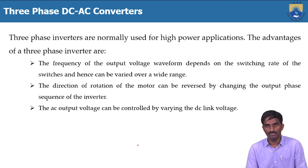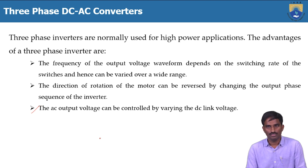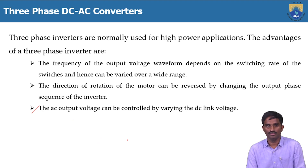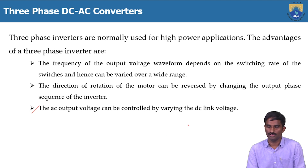By using this converter, we can change the direction of rotation of the motor. If it is rotating in a clockwise direction, the same motor can be rotated in an anti-clockwise direction by changing the output phase sequence of the inverter. The third advantage is that the AC output voltage can be controlled by varying the DC link voltage. These are the major advantages of the three-phase inverter, common to both 180-degree and 120-degree conduction modes.